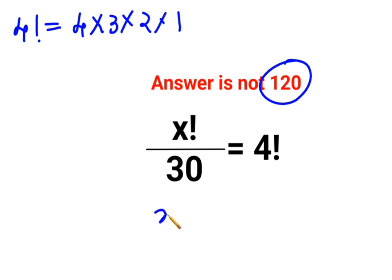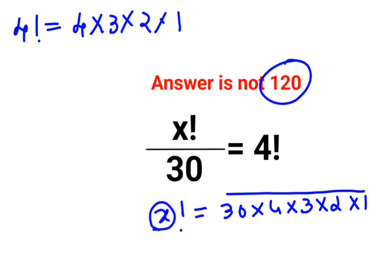Similarly, I can say x factorial is basically 30 multiplied by 4 into 3 into 2 into 1. Now things are getting confusing because this entire thing has to be written in terms of 4 factorial. Only then the factorial will cancel and we'll be able to find the value of x.